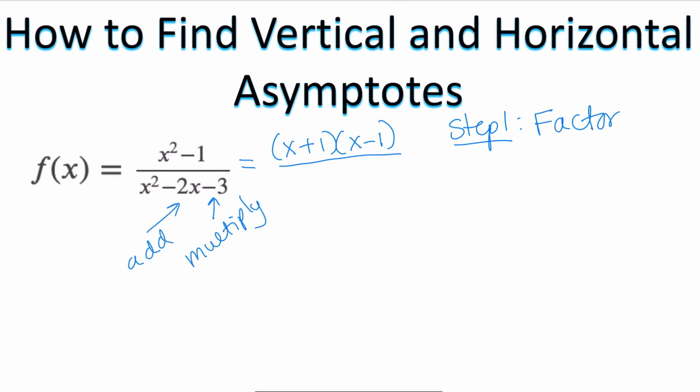That's going to be (x - 3)(x + 1) because negative 3 times 1 equals negative 3, but negative 3 plus 1 equals negative 2. So I've done step 1, which is to factor out the problem.